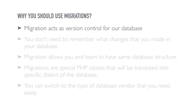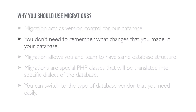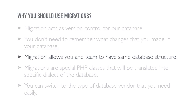Database migrations are like version control for our database, just like source code of our application. Our database structure may also change during development — we may add new tables, add new columns, or remove columns. Using database migrations will keep track of all changes that occurred in our database, so you don't need to remember what changes you made. If you're working with a team, database migrations allow you and your team to have the same database structure.